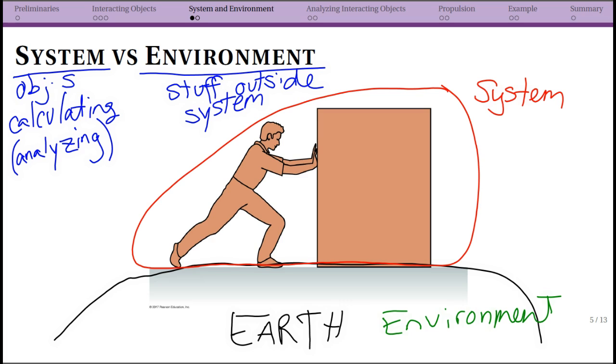Again, had I chosen the box only to be my system, the person would have been part of my environment. So what we then notice is that we do have two objects—I have my person and I have my box—and so if I start to analyze my forces, I note that they are interacting here. So my person and my box are interacting. I'm going to have some forces there, but I also notice that my person is interacting with the earth and that my box is